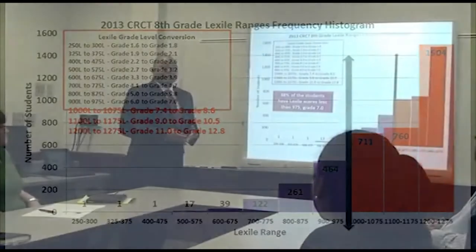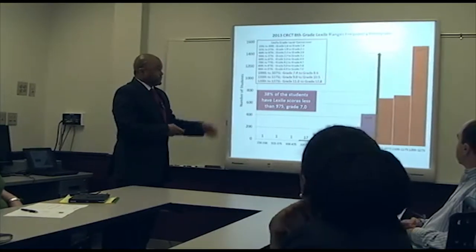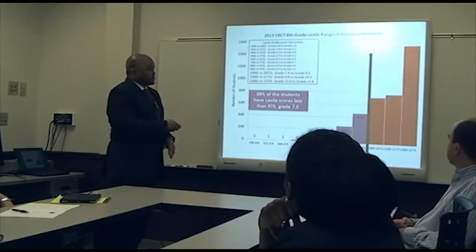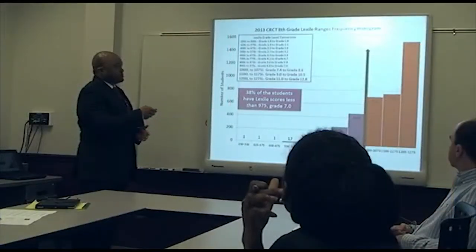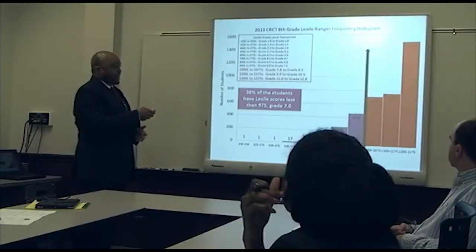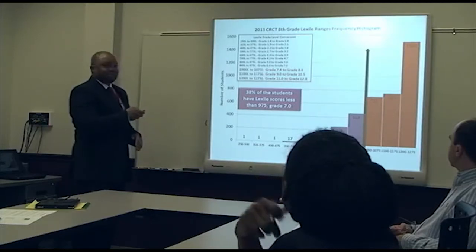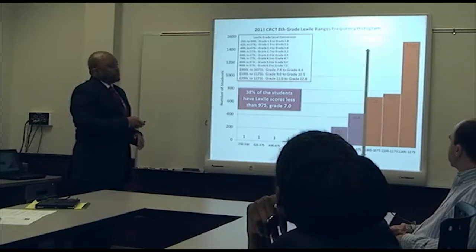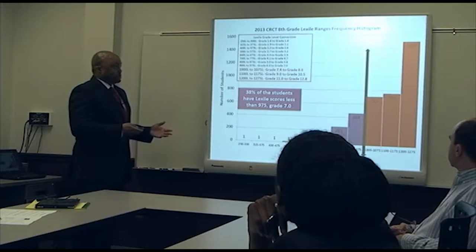Looking at our district data from 2013, we see that 38% of our students have Lexile scores less than 975, or the seventh grade level. Considering this is a ninth grade biology class, we want students to perform between 1,000 and 1075 on their eighth grade CRCT — exiting at a 1075 Lexile. That is our target for the group of students I'm about to introduce.